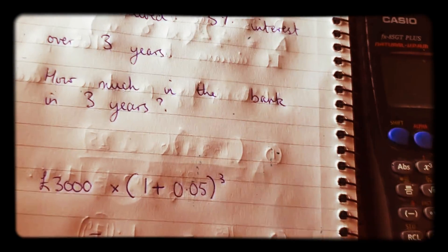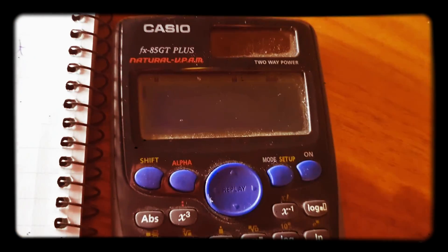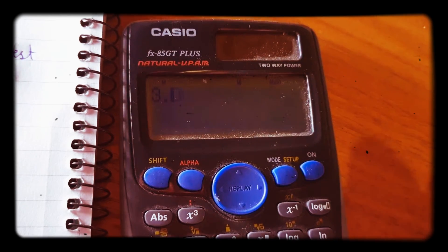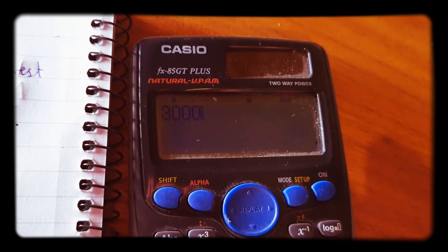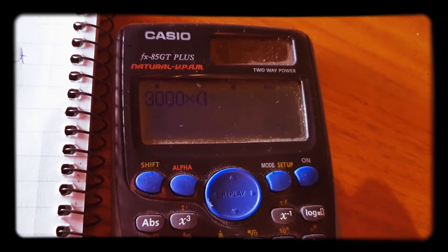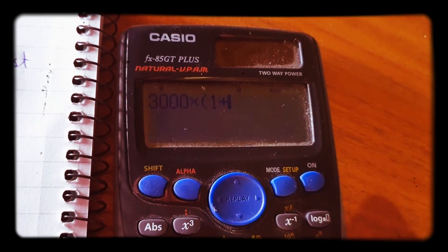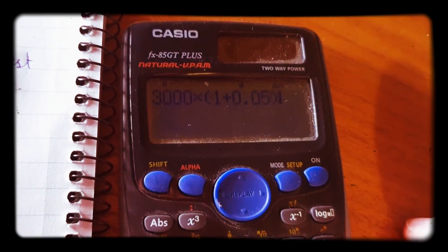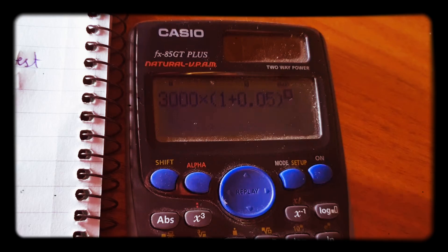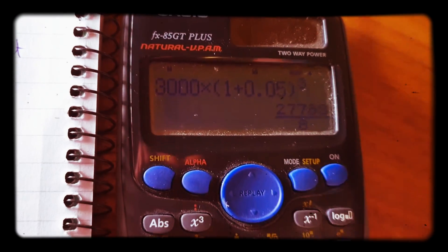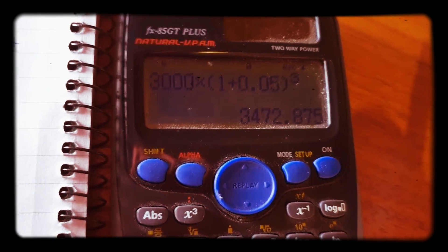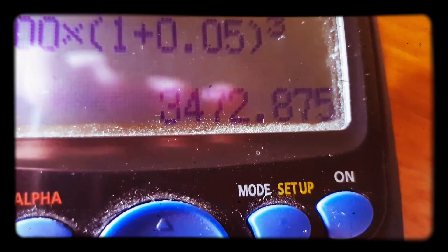So if we do that, £3,000 times one plus 0.05 all to the power of three years, and you get the answer £3,472.88.